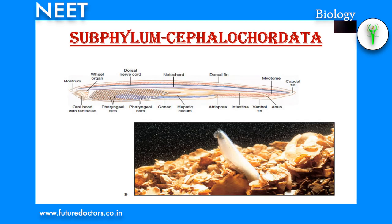Subphylum Cephalochordata: in cephalochordates, the notochord extends the entire length of the body and extends in front of the nerve cord. Notochord persists throughout life. A true enterocoelom is present, though reduced in the pharyngeal region. Example: Branchiostoma (Amphioxus).